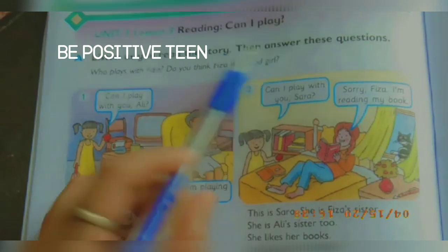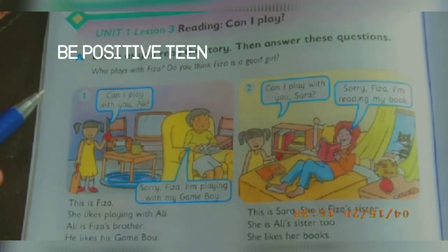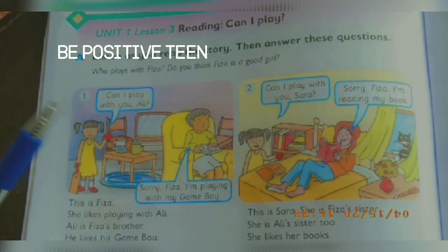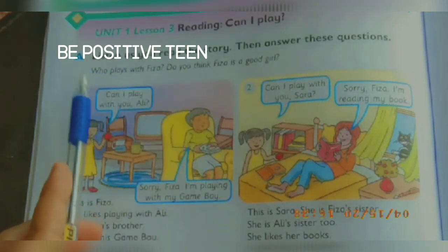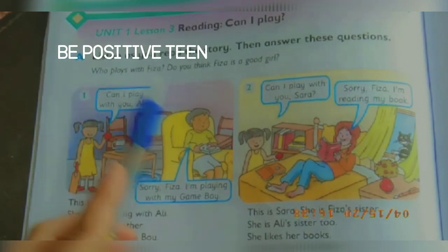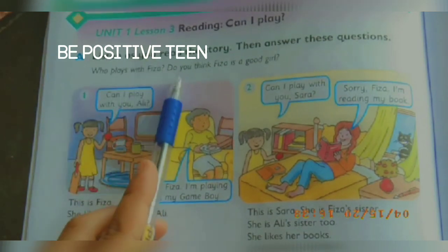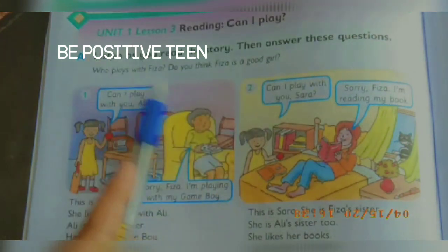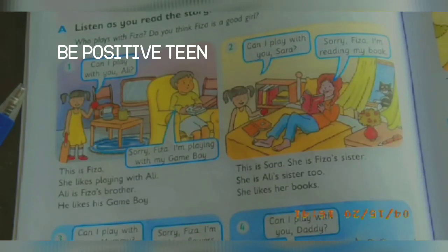Activity number E: Listen as you read the story, then answer these questions. First we are going to read the story and then answer these two questions: Who plays with Fizza? Do you think Fizza is a good girl?